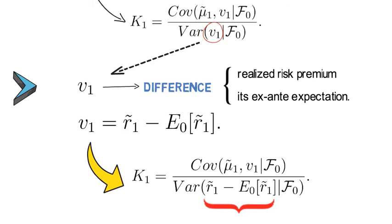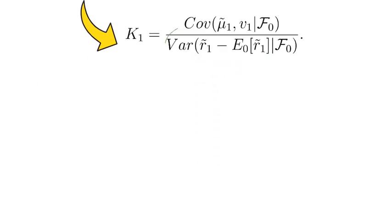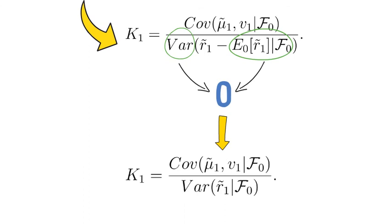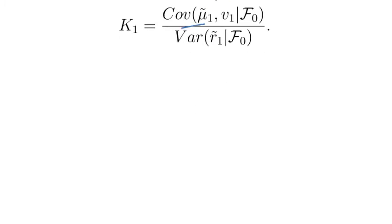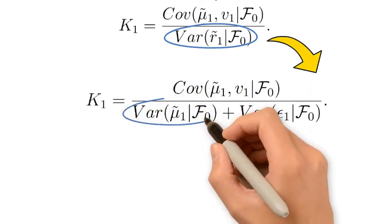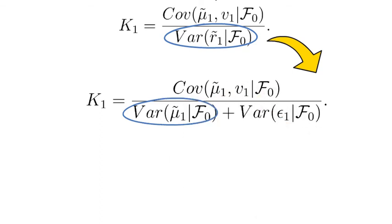Therefore the term for k1 changes to the conditional covariance over the variance of the spread between the realized risk premium and the ex-ante expected risk premium. Note the conditional variance conditions on F0 information, as does the conditional expectation. Therefore there is no randomness coming from that conditional expectation, and we can rewrite the optimal learning rate k1 as the covariance of mu1_tilde and nu1 divided by the conditional variance of r1_tilde. Looking at the denominator, the conditional variance of the realized risk premium can be rewritten as the sum of the uncertainty arising from the unobserved ex-ante expected risk premium and the variance of the measurement error.